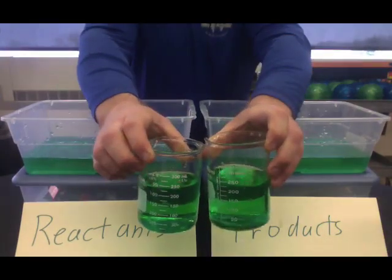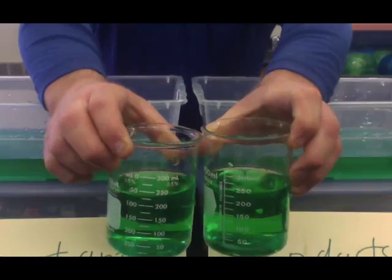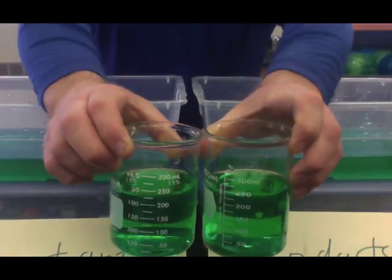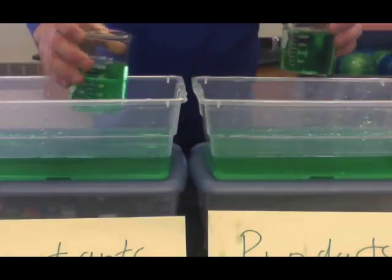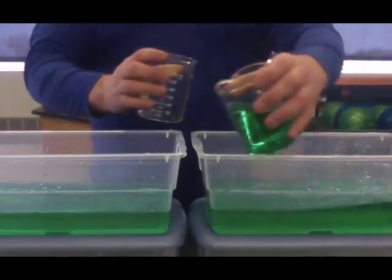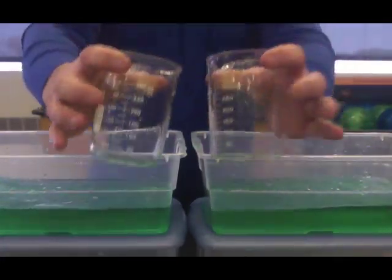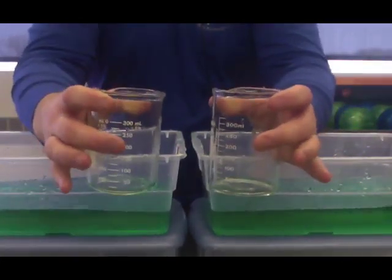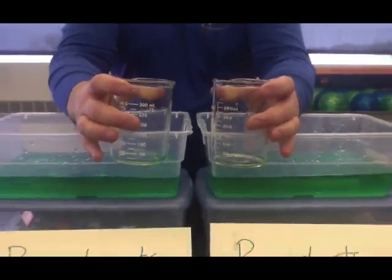So if we look, and again, this is not perfect measurements, but if we look at our volumes there, they're almost identical. We're showing that the amount that's crossing from here to here is equal to the amount going this way. Now the amount in the beakers represents the rate. So the rate of transfer is the same.